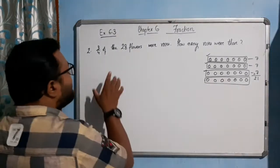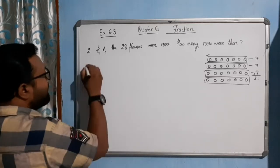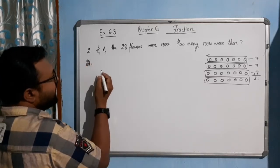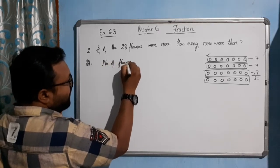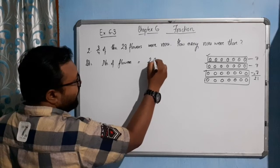So how we will solve this one? We will write like this: number of flowers equal to 28.